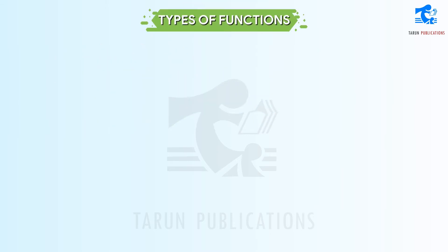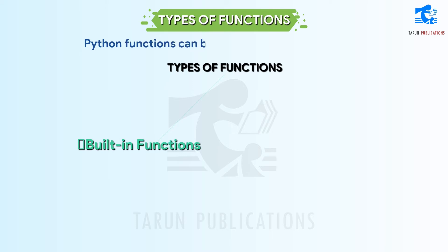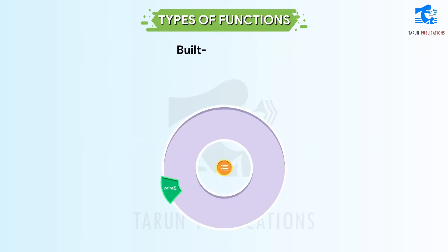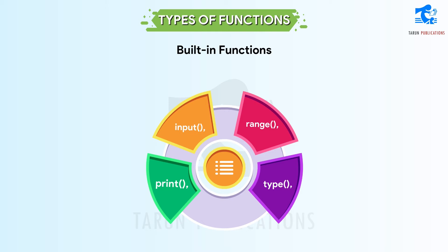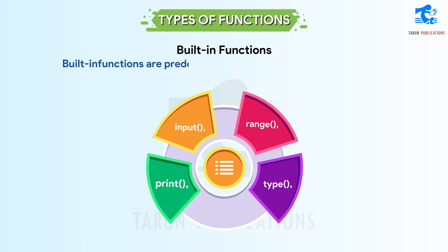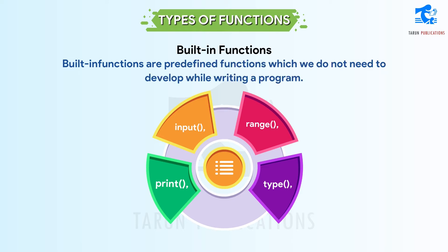Types of Functions. Python functions can be categorized into two types. Built-in Functions: the built-in category includes functions such as print, input, range, type, etc. Built-in functions are predefined functions which we do not need to develop while writing a program.